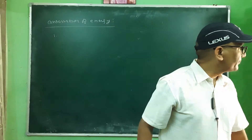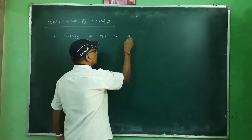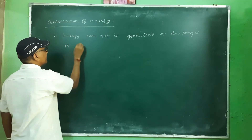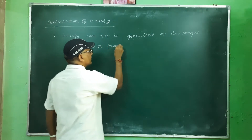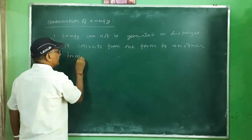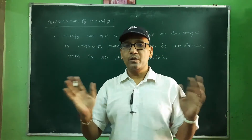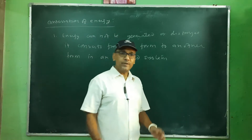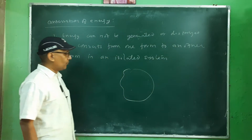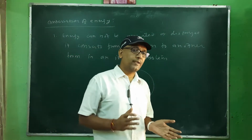From the law of conservation of energy, statement number one: energy cannot be generated or destroyed. In an isolated system — where there is no transfer of energy from outside — if the system is completely separated from the outer world, then within this isolated system energy cannot be generated or destroyed.